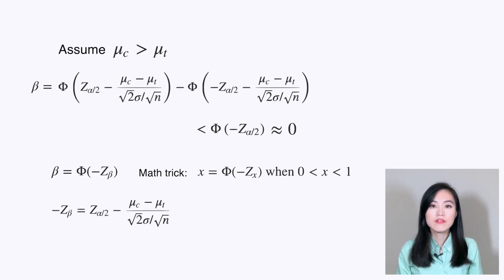So now we have -z_β equal to this expression, and we can solve for the sample size n using all the other parameters.